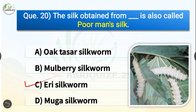Eri silk is called poor man's silk because it requires minimum infrastructure for production and is practiced by the poorer sections of society. Eri is the product of a domesticated silkworm, Philosamia ricini, which feeds mainly on castor leaves.